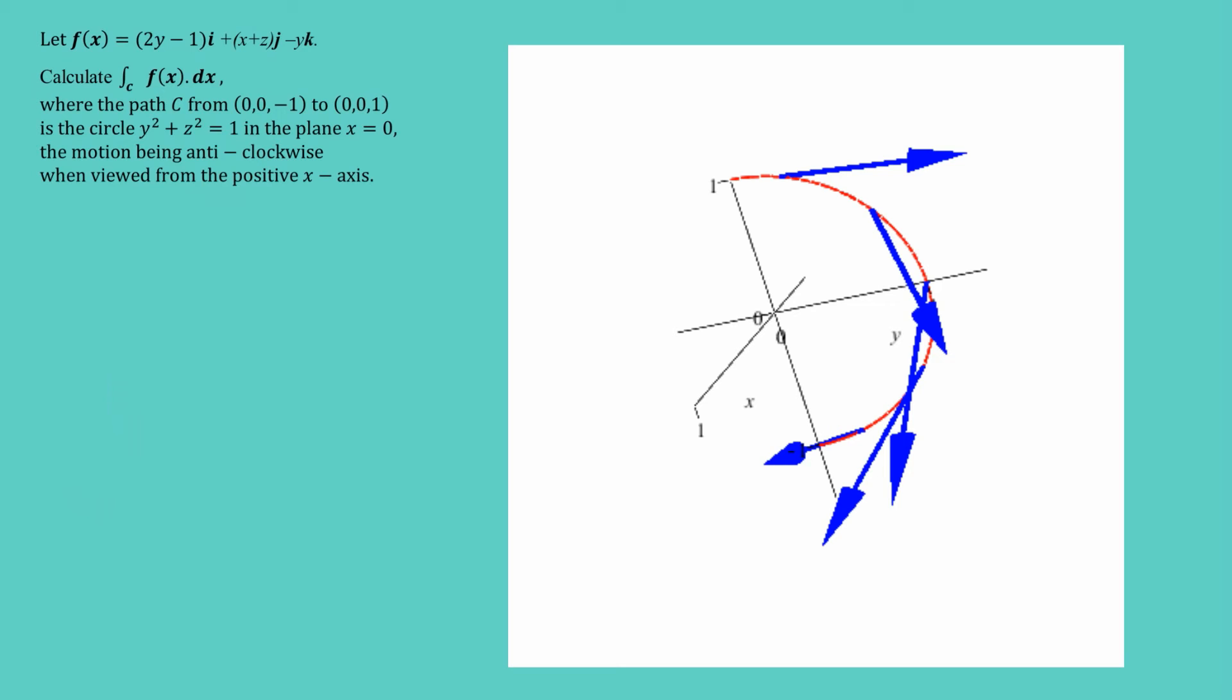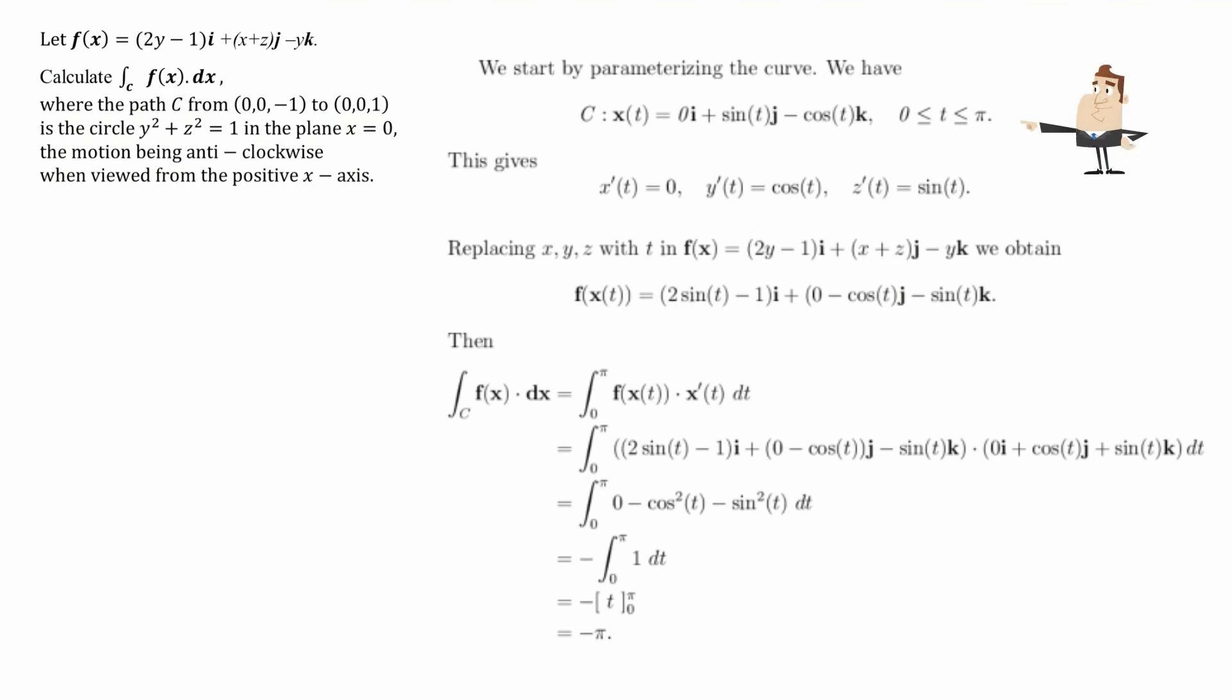Okay, so now let's go and have a look at how we can solve this. So I've just put up first we start by parameterizing the curve. That's what we did before and you can see that. So the curve is now given by bold x(t) and you can see it here. We're also going to need the derivatives of x(t), y(t) and z(t) with respect to t.